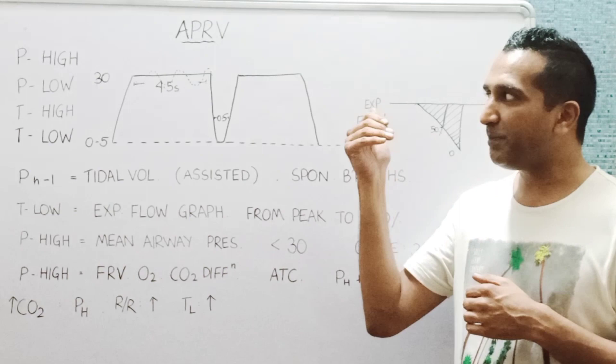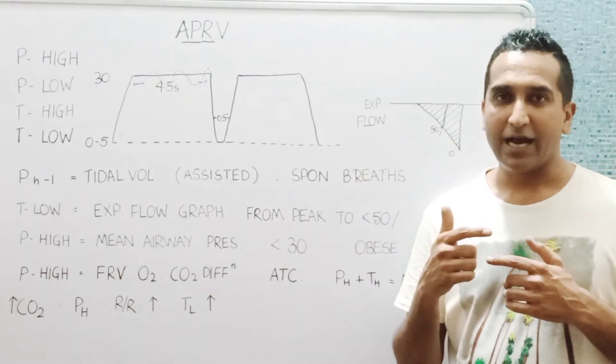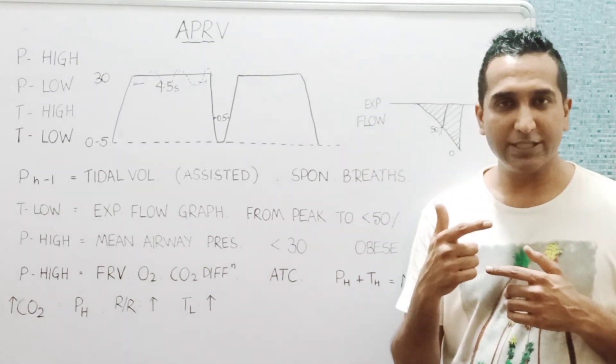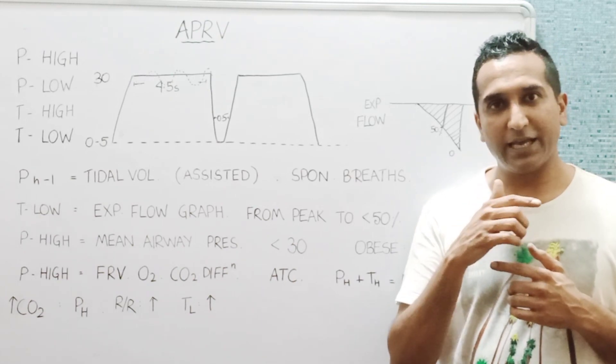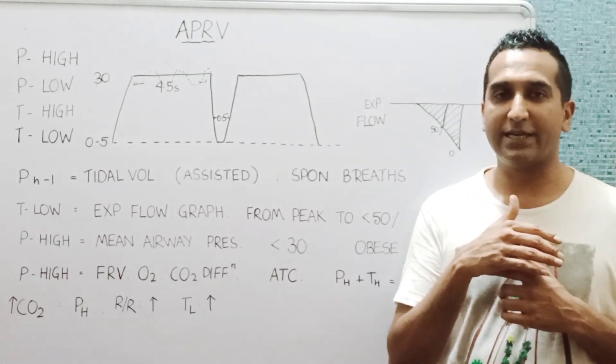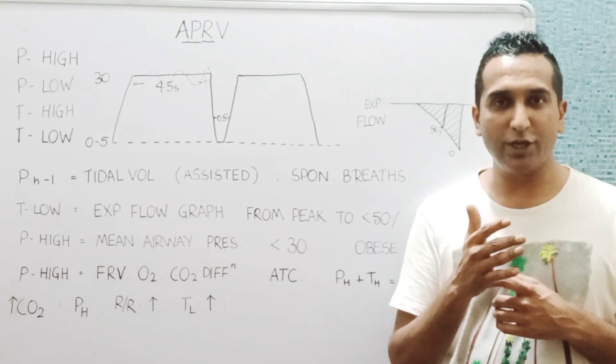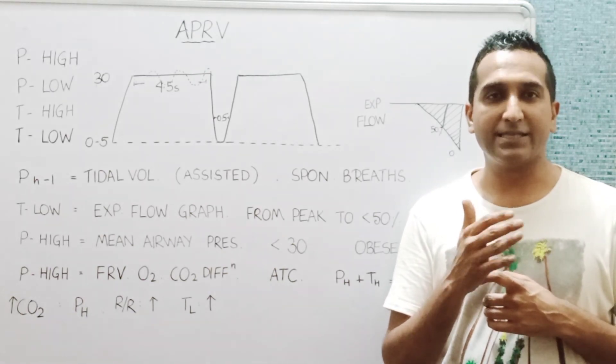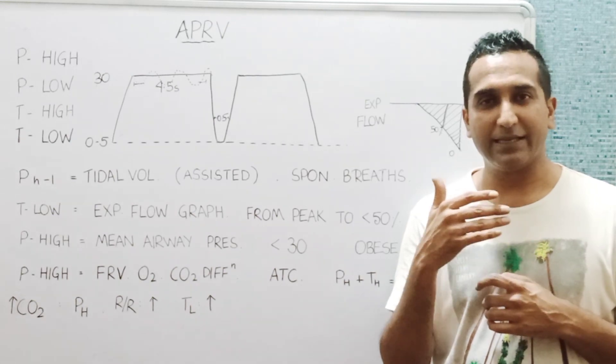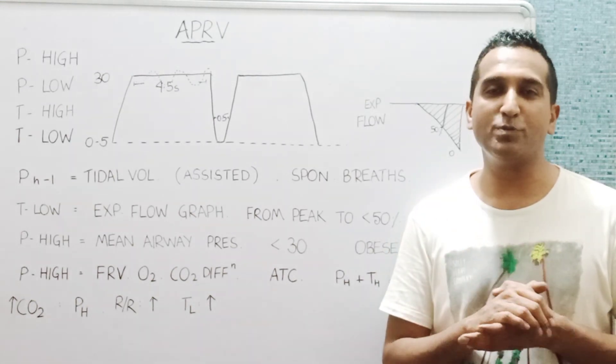So APRV allows higher mean airway pressures with an ability to control the carbon dioxide. It still causes lesser lung injury because there are fewer breaths and fewer times of de-recruitment.